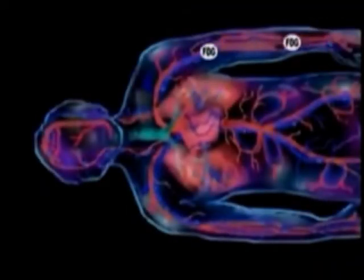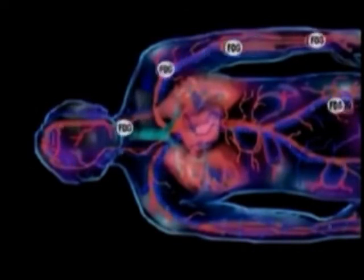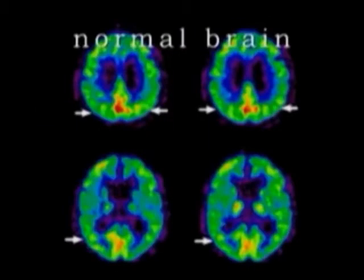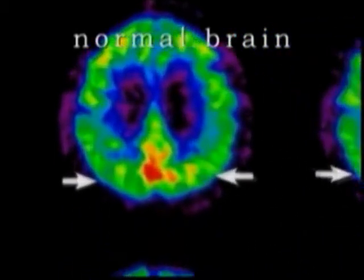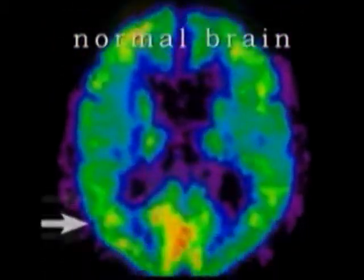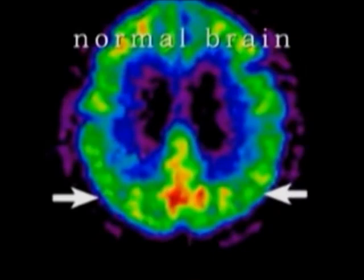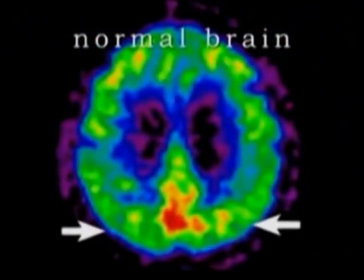The blood carries the radioactive glucose throughout the body and into the brain. The colored areas show where there is more glucose metabolism taking place, indicating healthy brain tissue. In these PET scans, red indicates the most glucose metabolic activity, yellow somewhat less, green even less, and blue minimal.